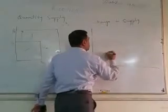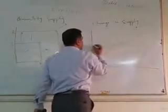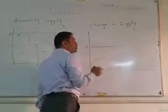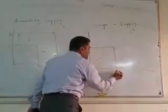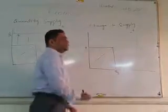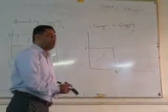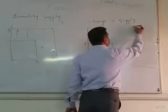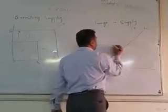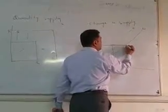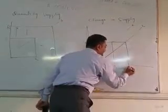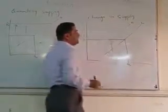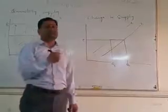If price remains constant — for example, with latest technology, how much cost of production is reduced — therefore supply shifts outward. So by price, you can also sell products at that price. This is called increase in supply.